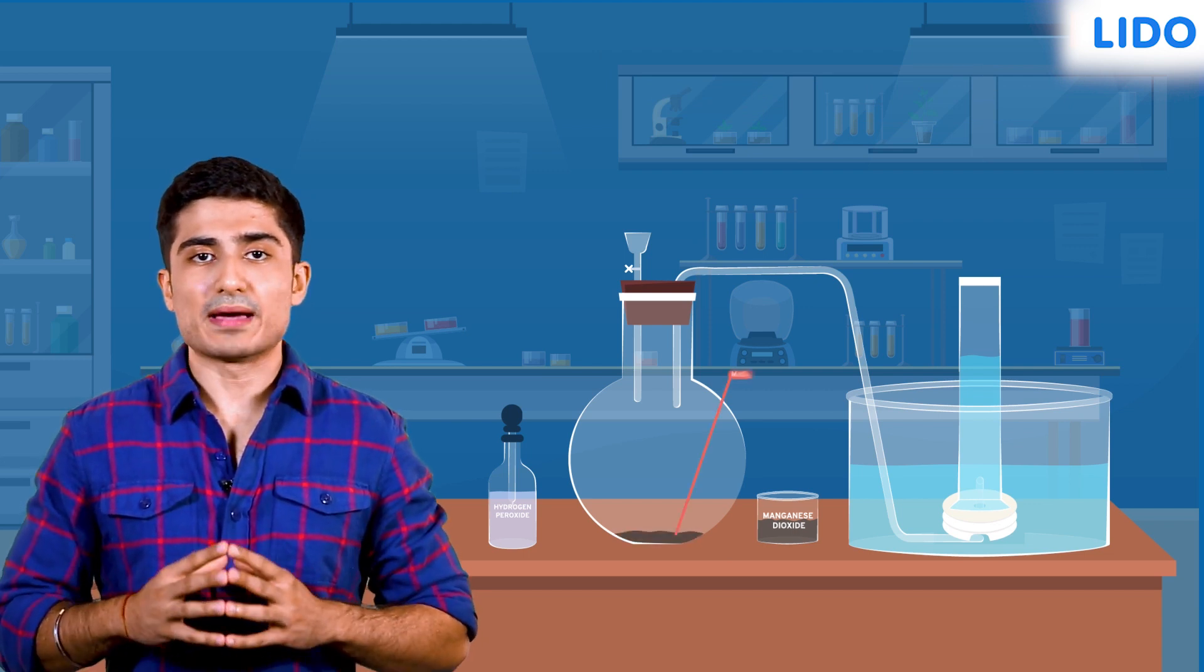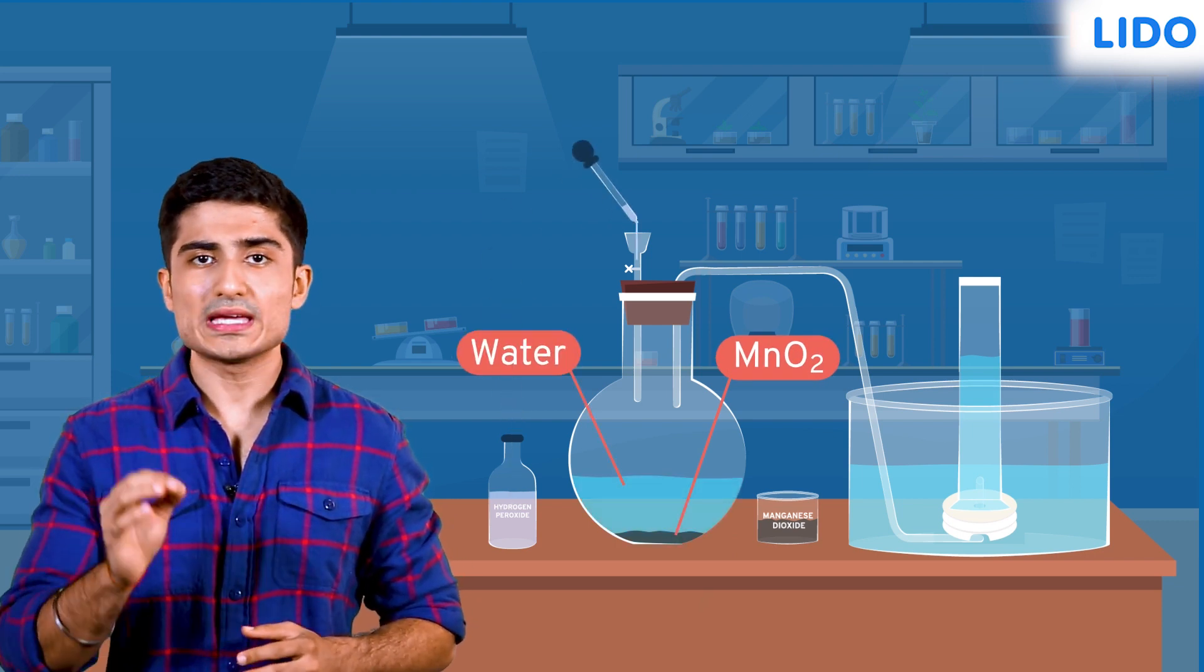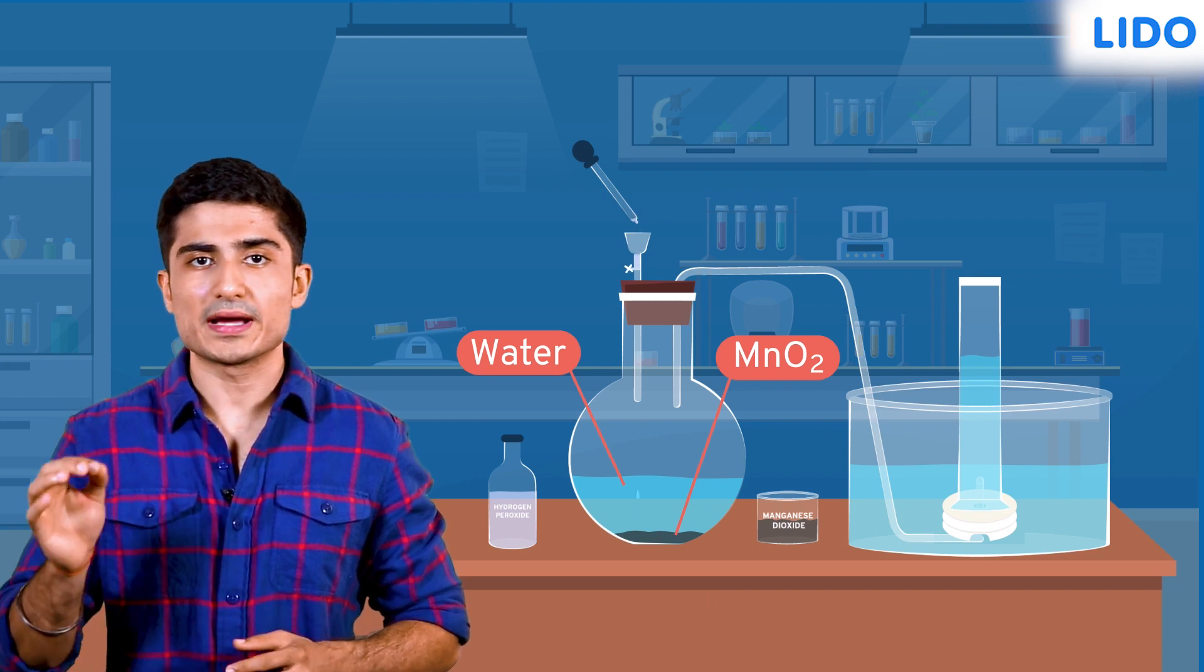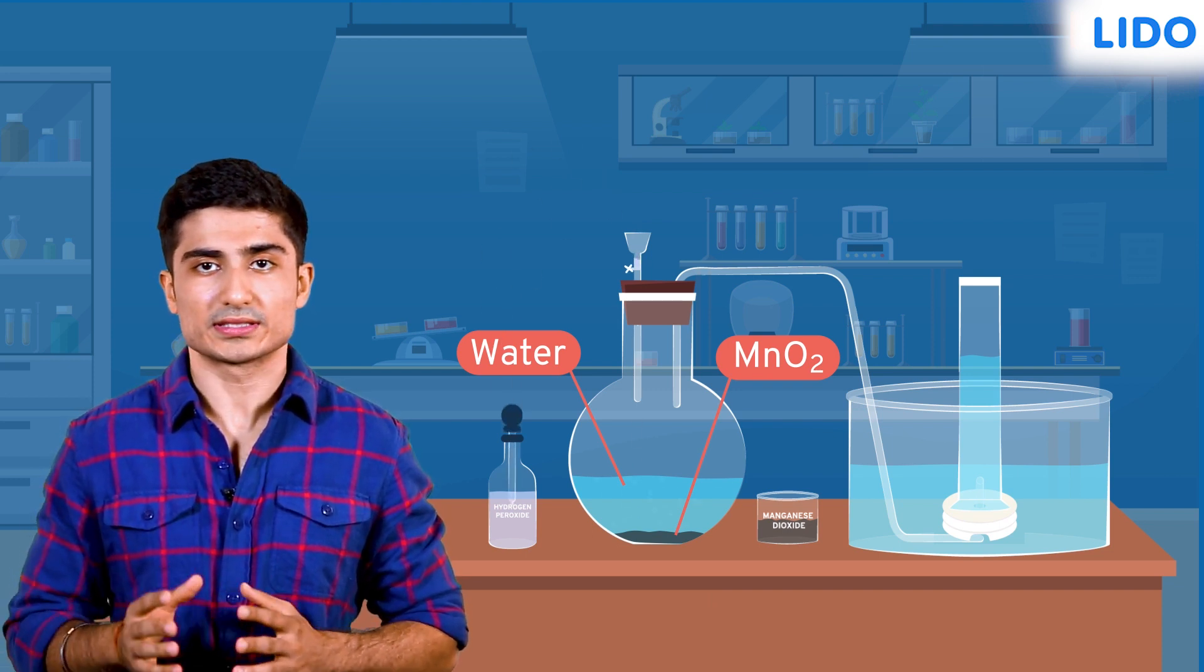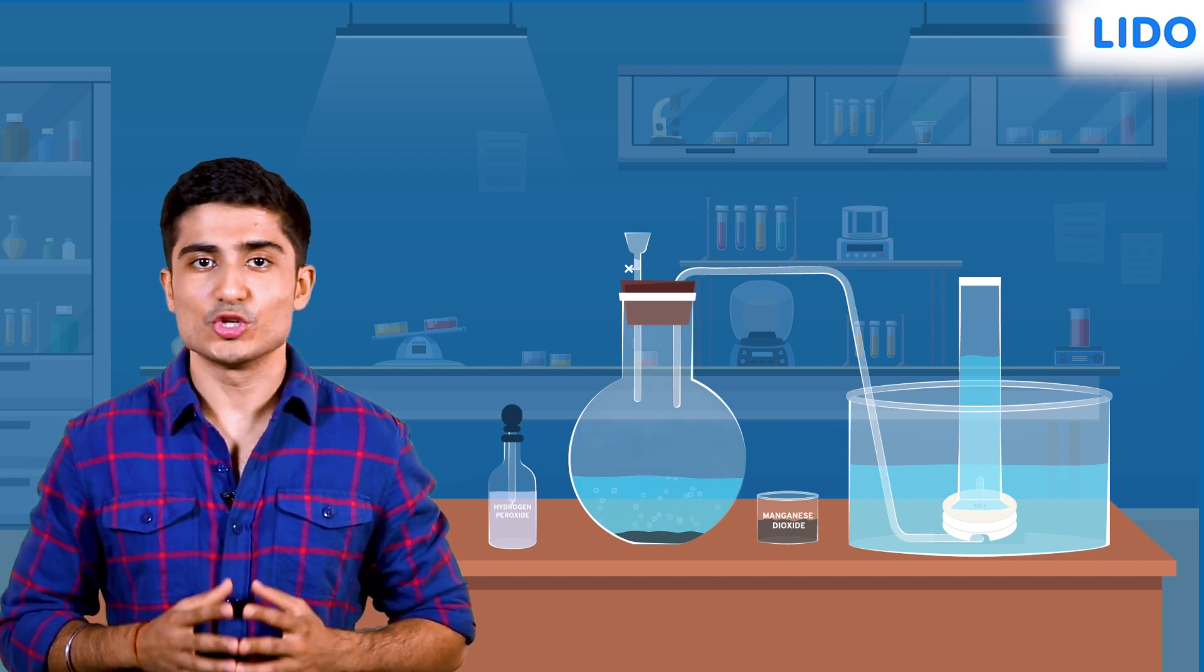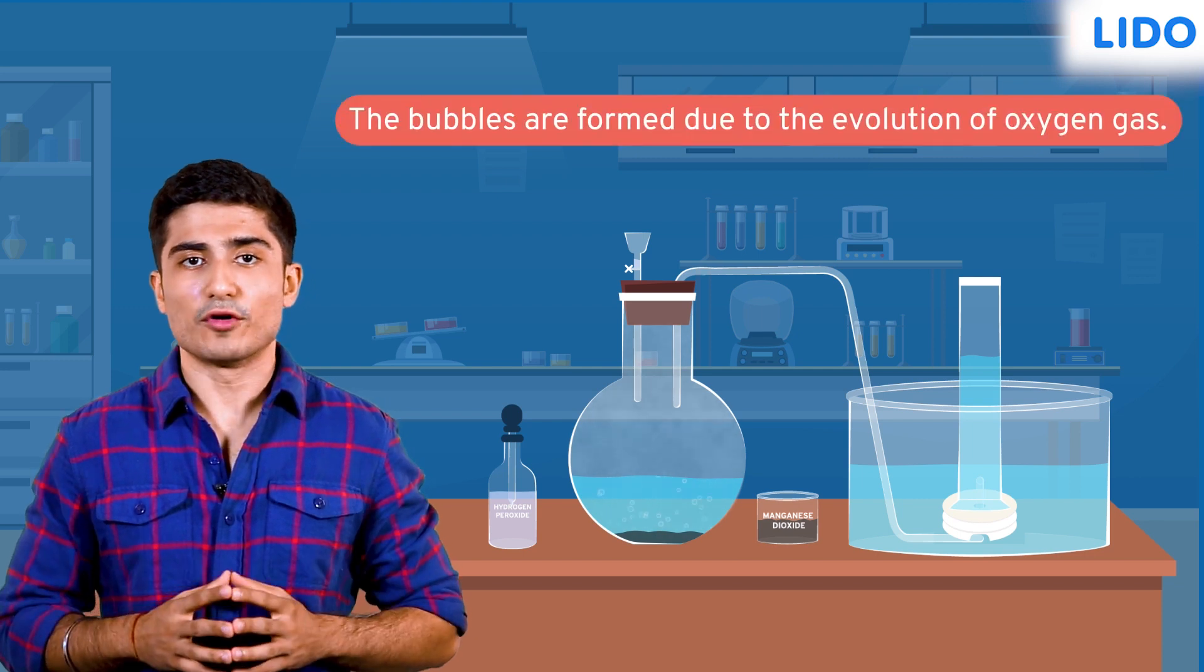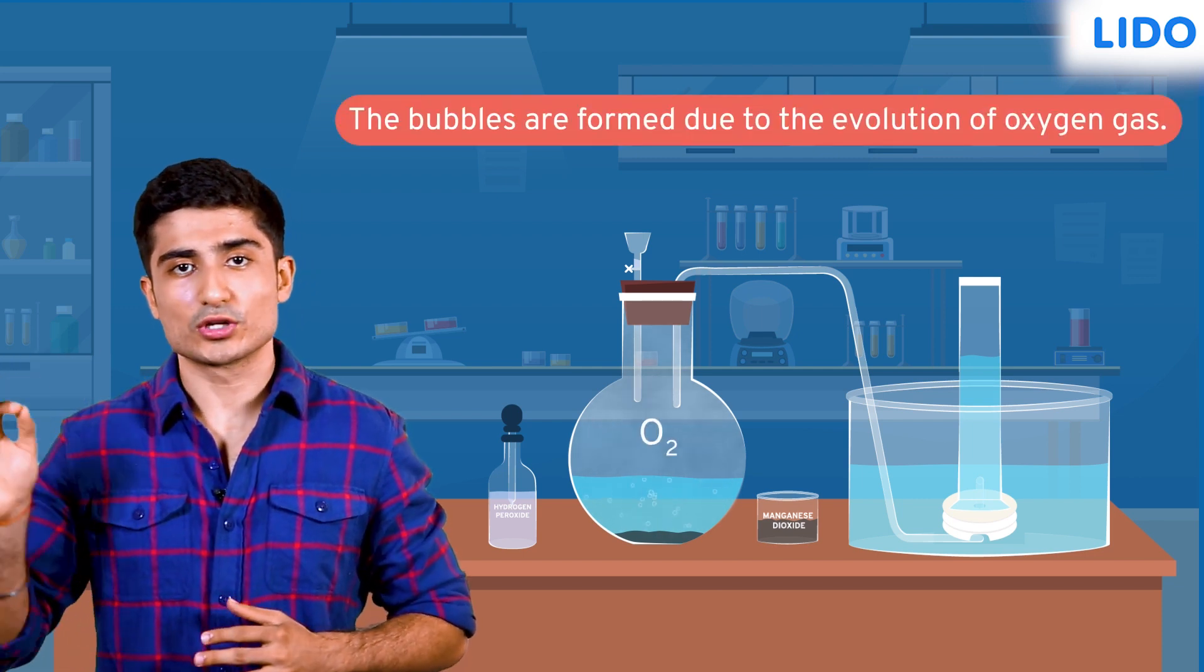We will take some manganese dioxide and water in a flat round bottom flask. We will now slowly add hydrogen peroxide drop by drop into the flask through the thistle funnel. As the hydrogen peroxide is being added, you can see that there are bubbles forming in the water. The bubbles are formed due to the evolution of oxygen gas.